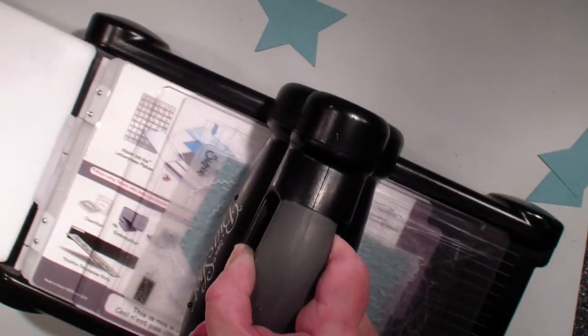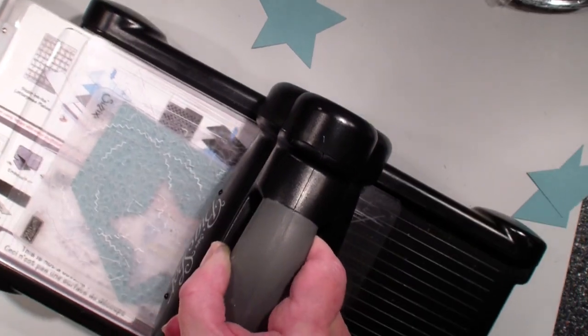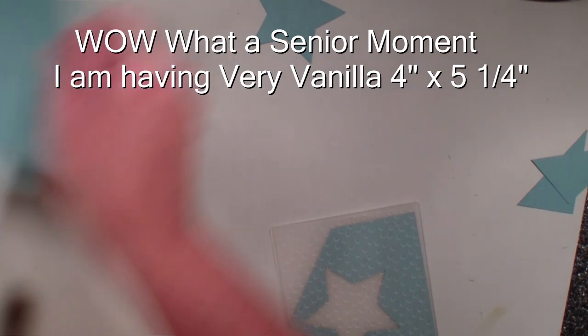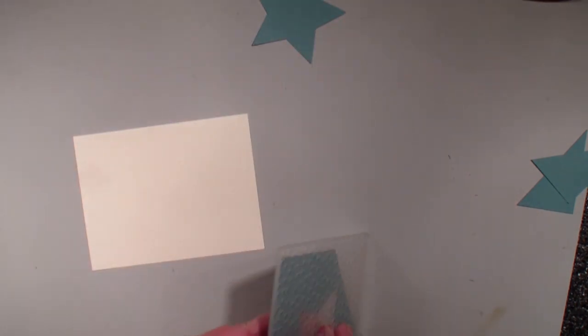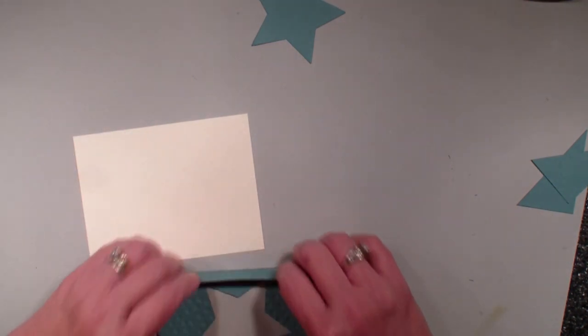I also have another piece of cardstock, Very Vanilla. This also measures four and a quarter by five, so it's the same size as that flap that I trimmed off, and I'm just going to find those score lines again.